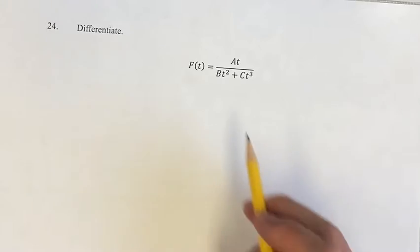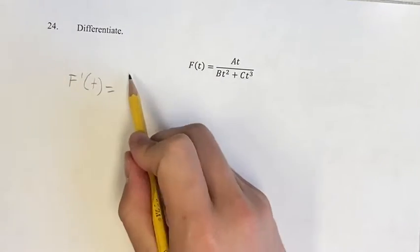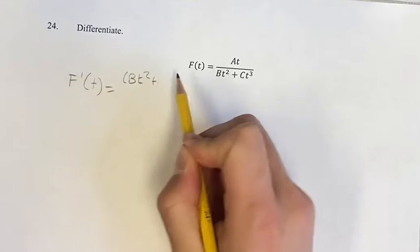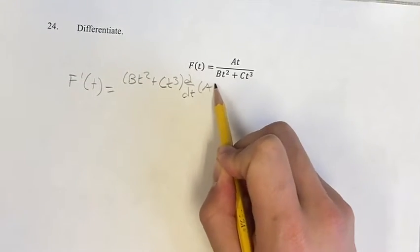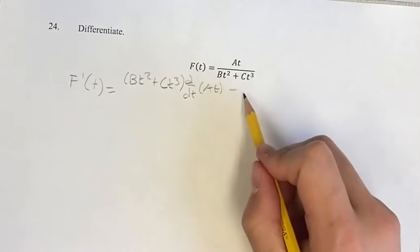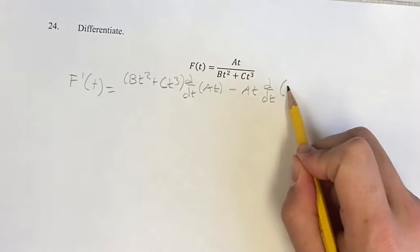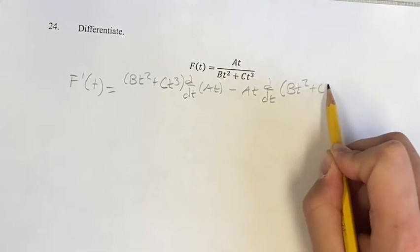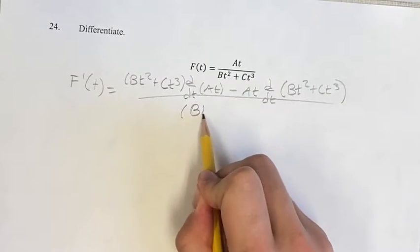So we're going to use the quotient rule here because we have a fraction. Our derivative is going to be the denominator times the derivative of the numerator minus the numerator times the derivative of the denominator, all over the denominator squared.